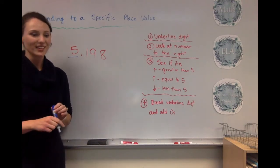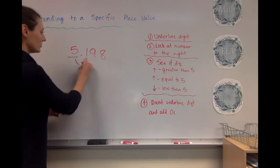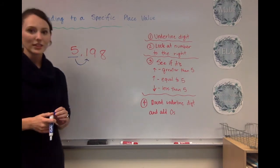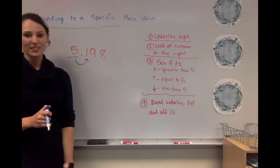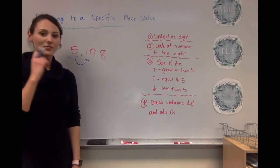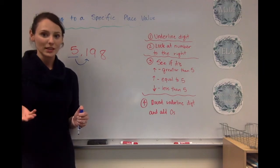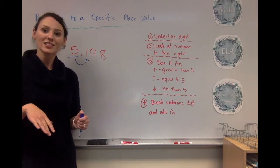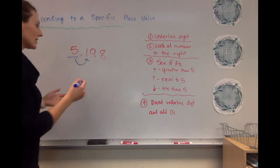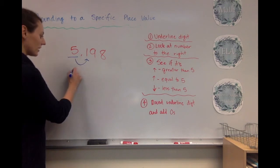Okay, now I'm going to do step two, look at the number to the right, make my arrow. So I'm looking at the one. I go on to step three, and I see if it's greater than five, equal to five, or less than five. So one is less than five. So if it's four or less, let it rest. So that means I'm going to keep my five the same.